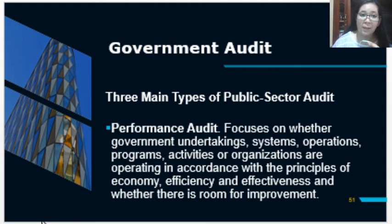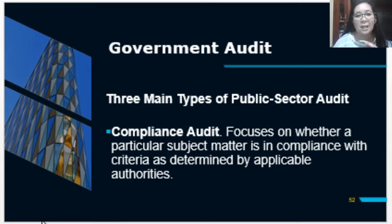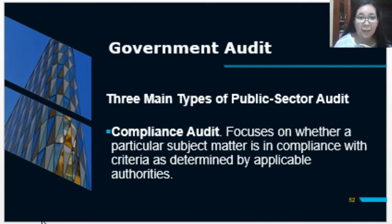Performance audit focuses on whether the government undertakings — the systems, operations, programs, and activities of the organization — are operating in accordance with the principles of economy, efficiency, and effectiveness, or whether there is room for improvement. This is somewhat the same as what we discussed under performance audit. Another type is compliance audit, which focuses on whether the particular subject matter complies with the criteria as determined by the applicable authorities. Under government agencies, they follow certain republic acts and laws, and the auditor determines if they complied with such regulations.